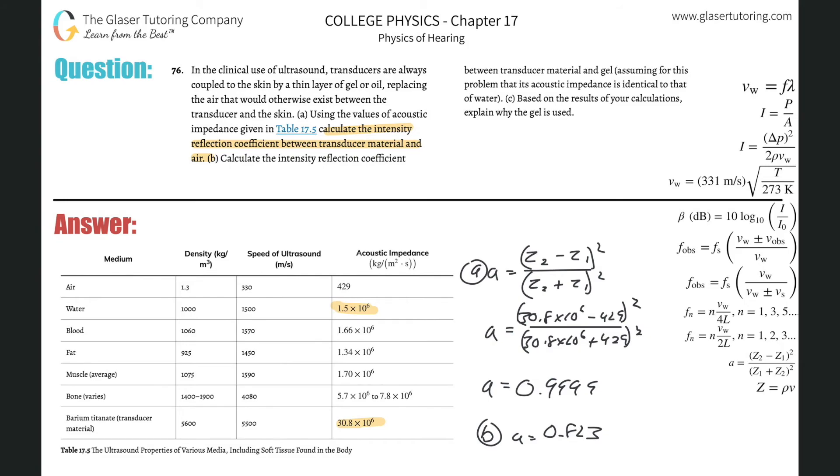And then explain why the gel is used. Well, why do you think? Right? It matches the impedance better. The reflection coefficient is lower. There's less, it can penetrate better. That's basically what it is. All right, guys. So thank you so much for tuning in. Please remember, subscribe. We'll see you soon. Bye.